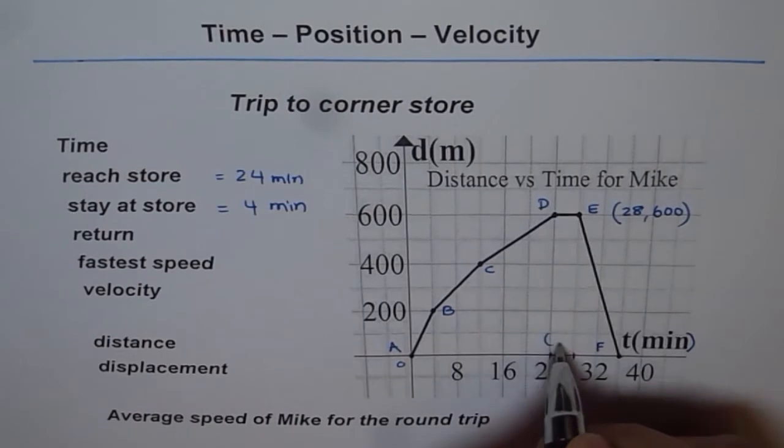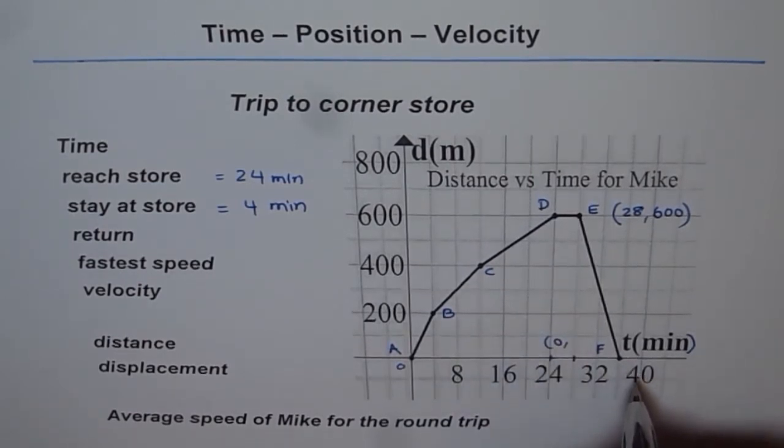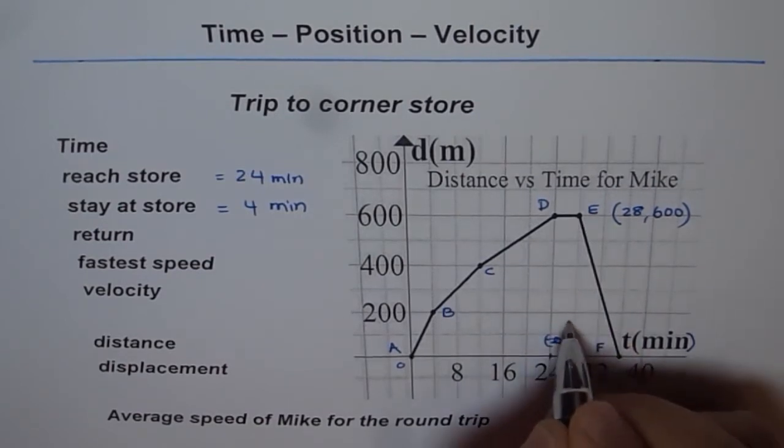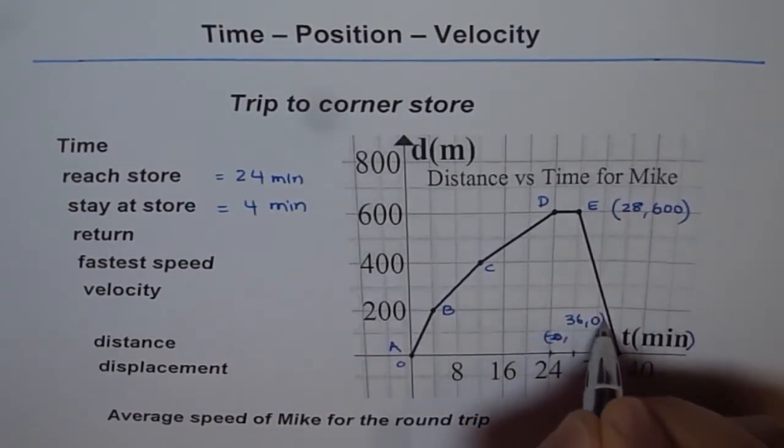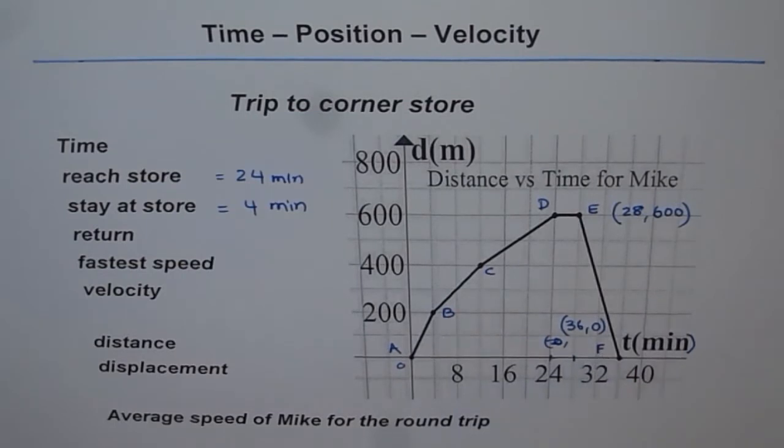What are the coordinates of E? Let's call this point F when he reaches home. The coordinates are 0. Oh sorry, the coordinate time is 36. So the coordinates for F are 36 and distance is 0.